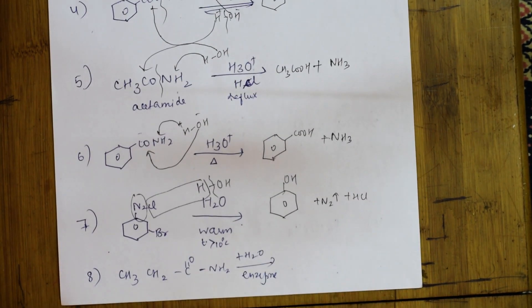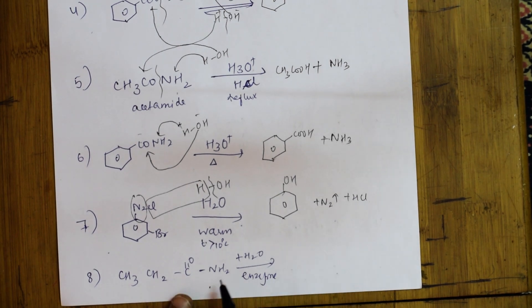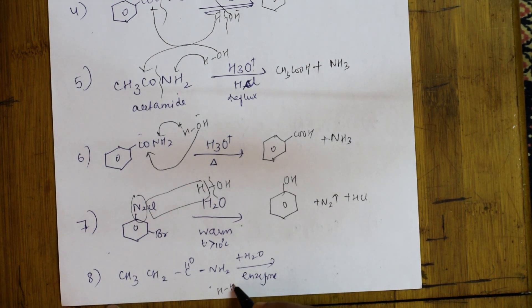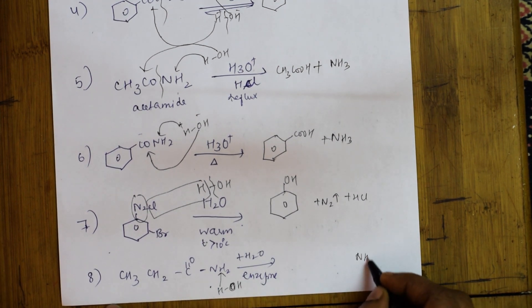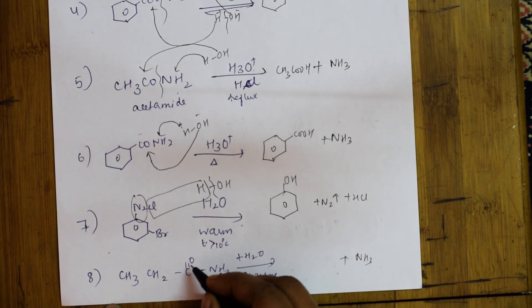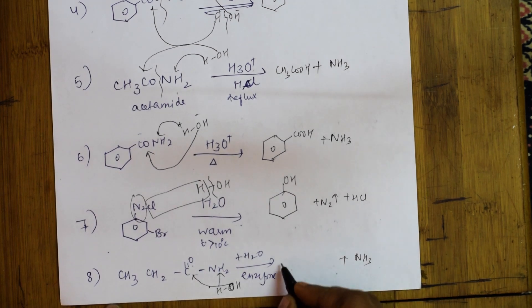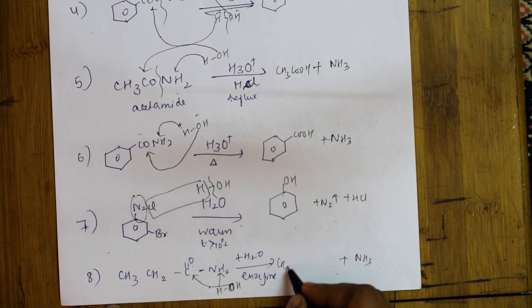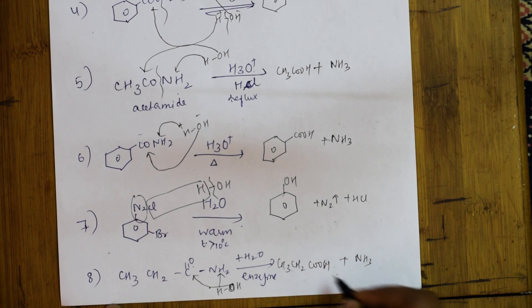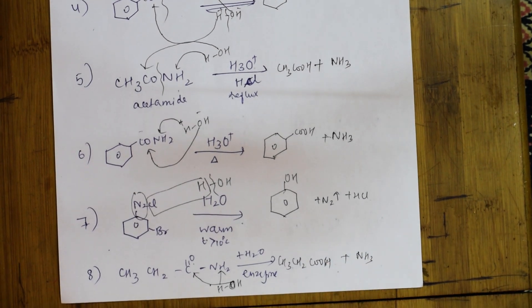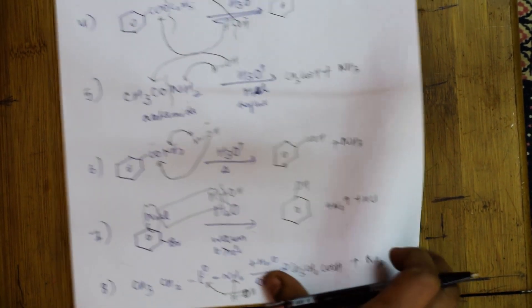Now let us see this reaction. Here it is again acetamide. As soon as you see acetamide, you need to take out ammonia. The ammonia leaves, and the leftover water adds to this. This becomes CH₃CH₂COOH — an acid. Isn't it simple?